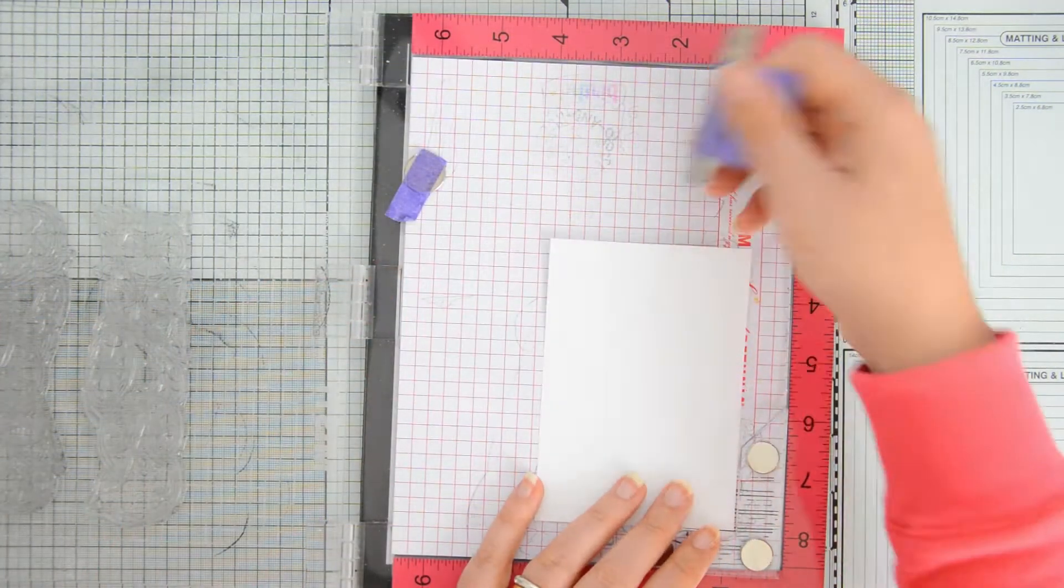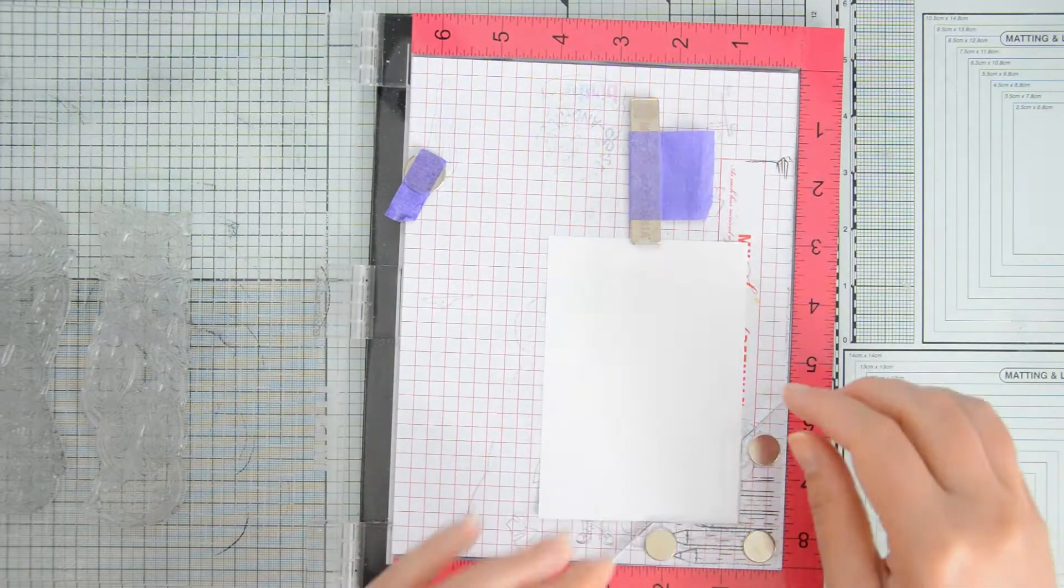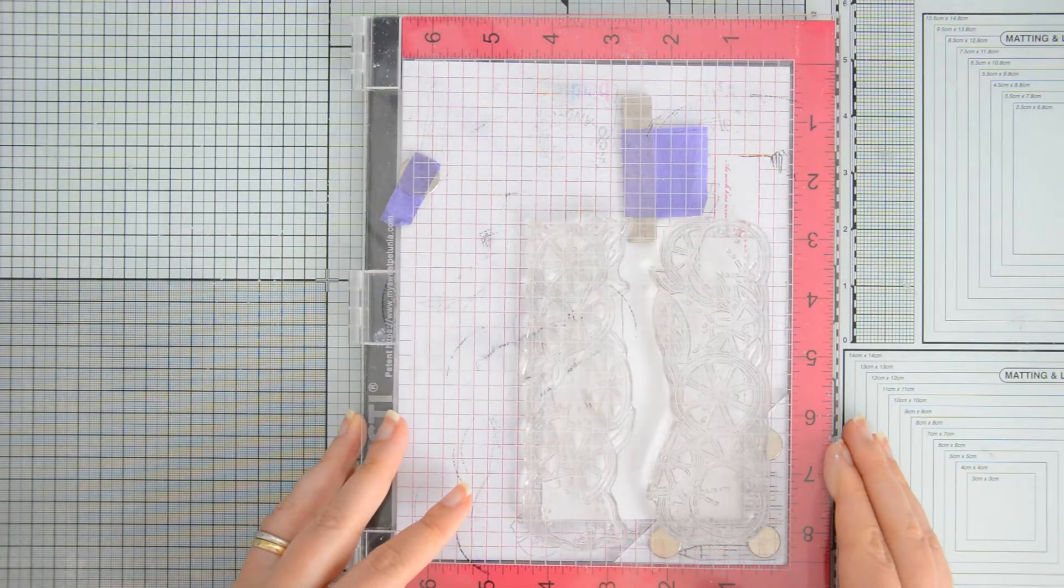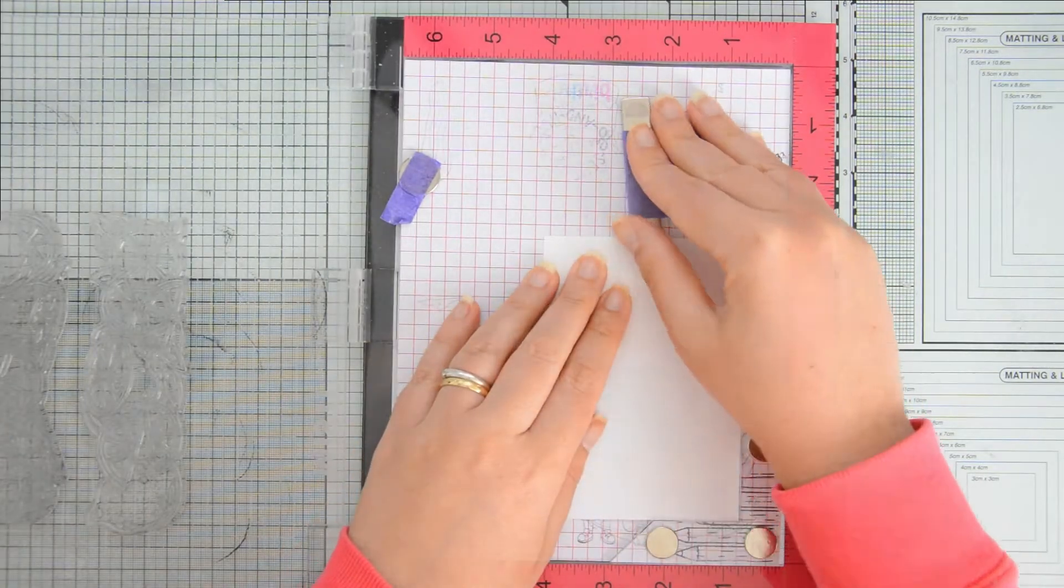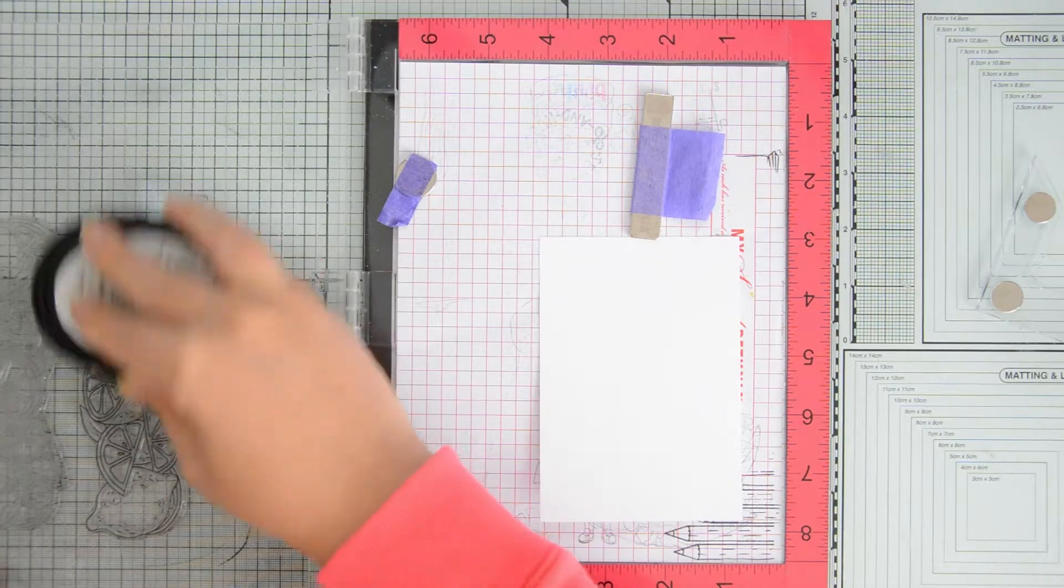The next step was to work on my images and here I am using my Misti and the creative corners because the images will hang off this little panel a little bit, and so the creative corners help me make sure that the paper will not shift.